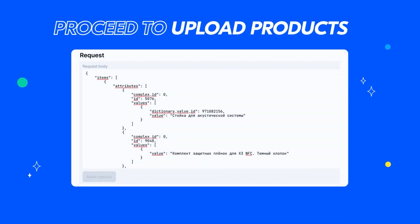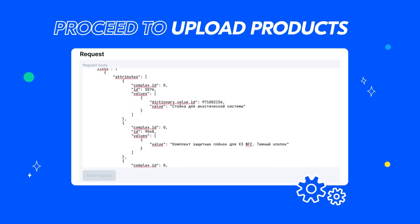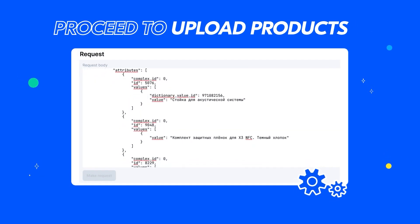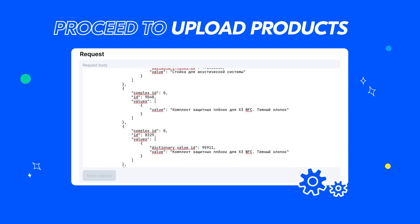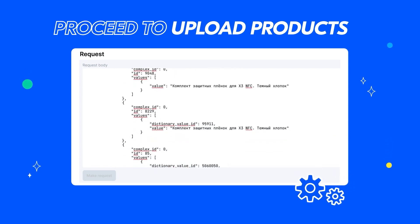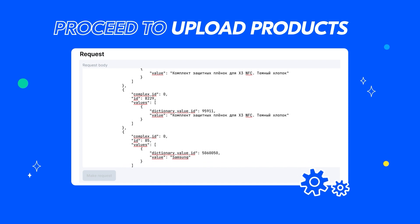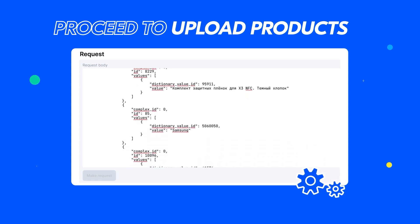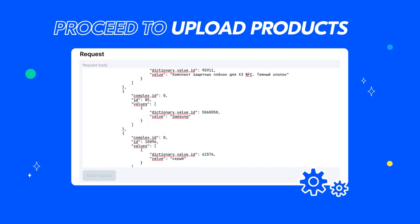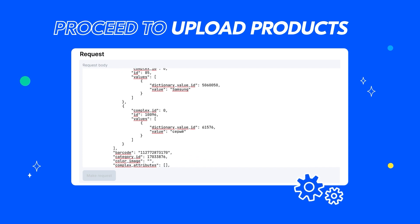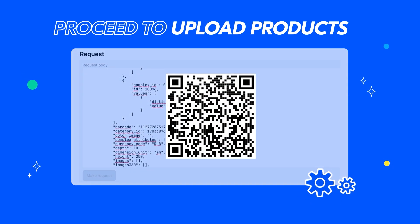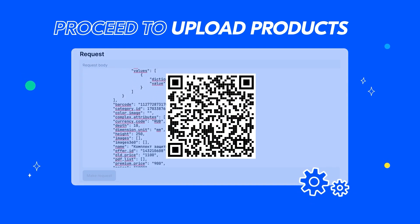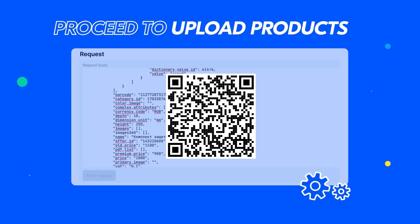After comparing your attributes and characteristics with the Ozone attribute model, you can start uploading products. Up to 100 products can be transferred in one request. Images are uploaded with a direct link to cloud storage. To learn more about the methods of Ozone Seller API for uploading and updating products, scan the QR code on screen.